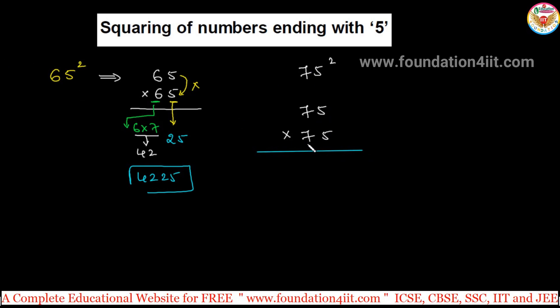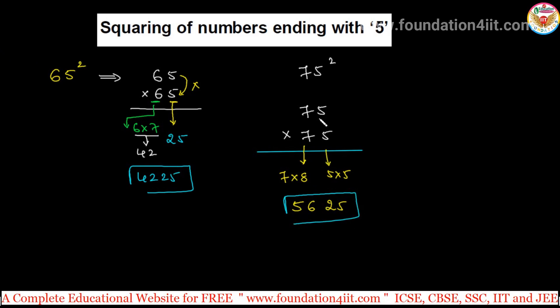This is 75 times 75. Without taking much time, because of the particular combination, you can use it directly. First number 7, multiply 7 into the next number 8. 7 into 8 is 56. Calculate mentally and write 56, immediately beside this 5 into 5, that is 25.